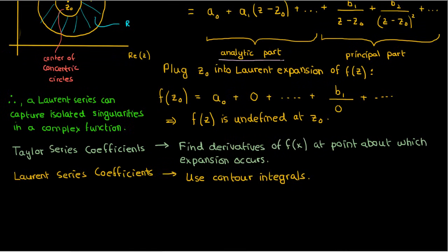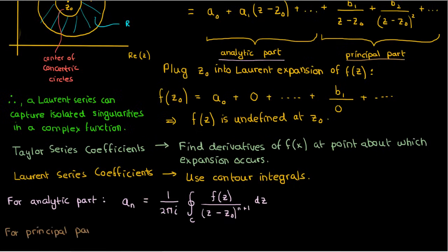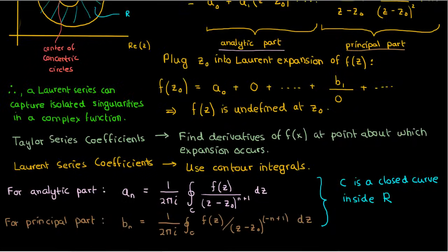For the coefficients in the a series, or the series corresponding to the polynomial part of the Laurent series, the formula looks something like this, while for the b series, or the principal part of the Laurent series, the formula looks something like this. Note that in these integrals, c is just a closed curve inside R that surrounds z0.